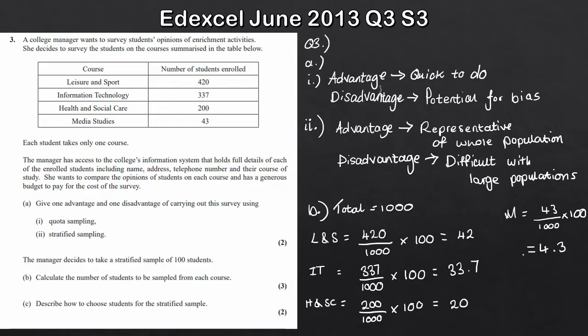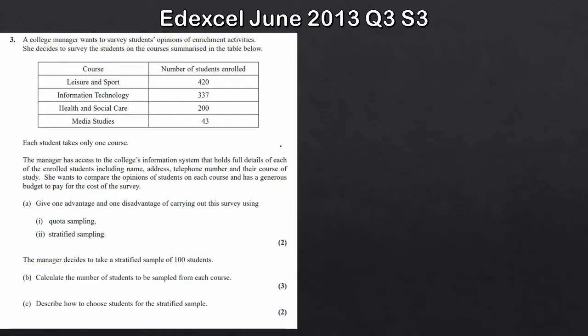Finally the last one, this will be for media studies. That's going to be 43 divided by a thousand times by 100, and if you work that out you'll get 4.3. Now we've just got to be careful here because obviously we've got these decimals. Don't forget, if you've taken a sample of 100 students, if you add each one of these up you should really get 100. So all I'm going to do is round the decimals to the nearest integer. So 33.7, that'd be 34, and 4.3 we'd write that as 4. Just be careful for that. Make sure you round appropriately.